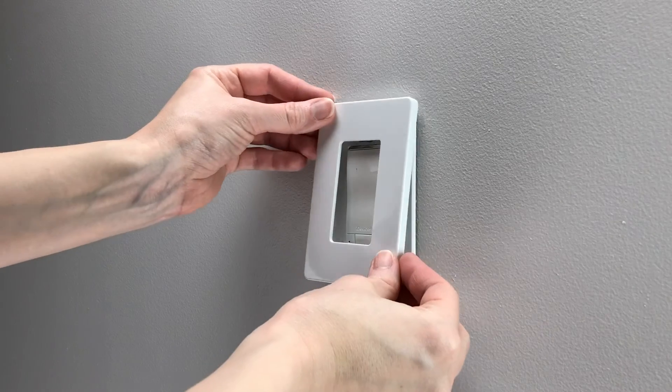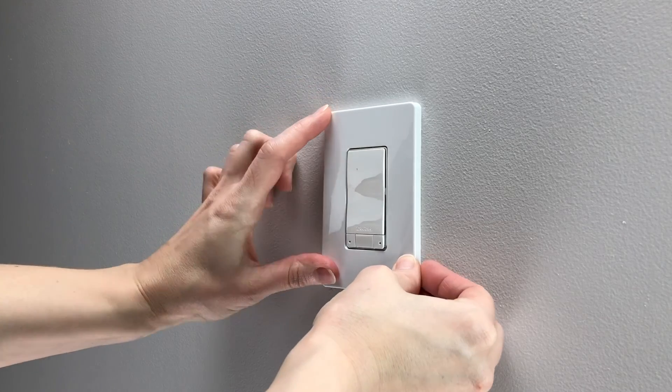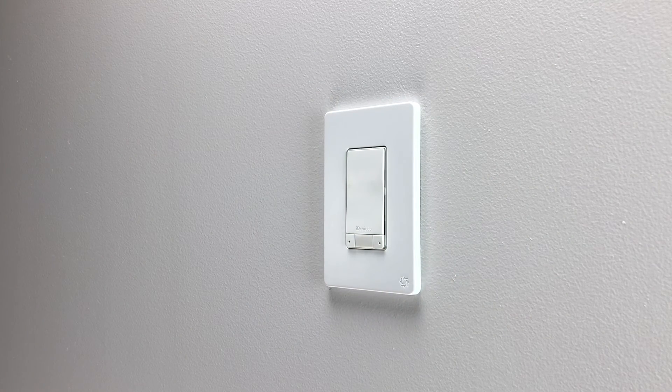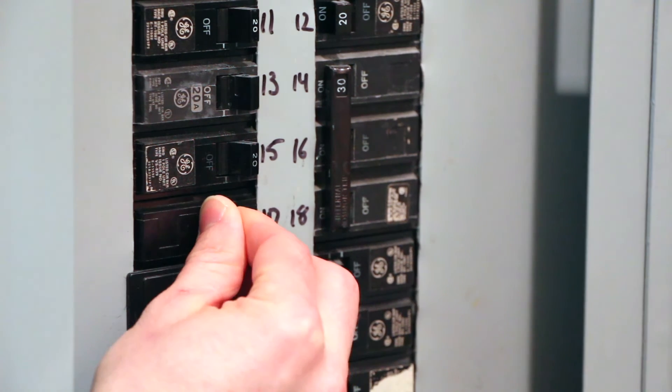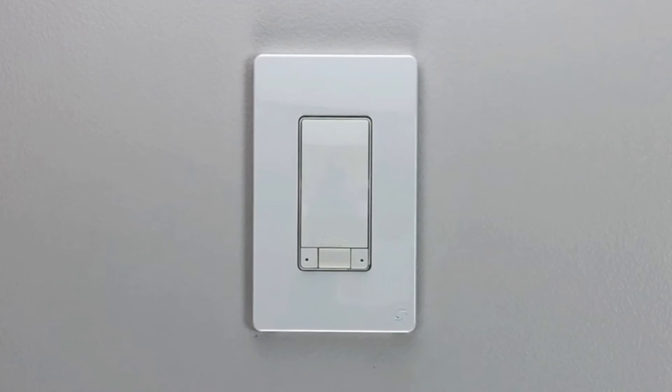Instinct fits any standard size rocker faceplate, so you may choose to select one that's best for your home. Turn the power back on at the breaker and confirm that the Alexa ring lights up blue and begins to spin.